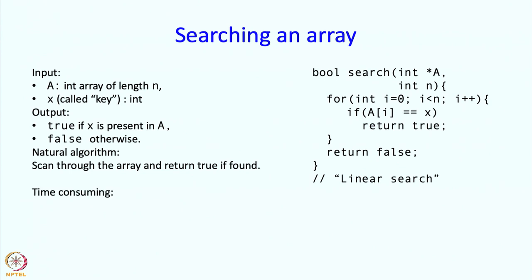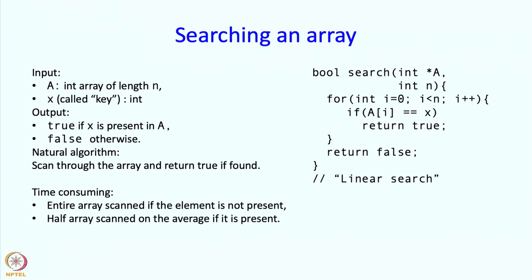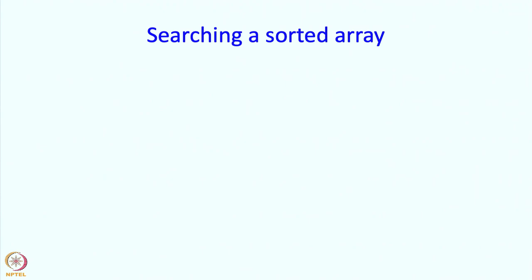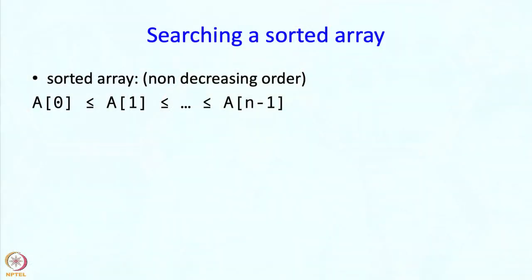I just want to observe that linear search is somewhat time consuming. To decide whether x is present we essentially have to scan the entire array — certainly the entire array if the element is not present. On average, if the element is present, we scan half the array. So if the array is large this can take quite some time. Let us now consider a different problem: searching in a sorted array.